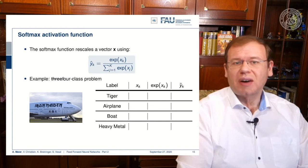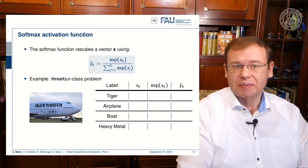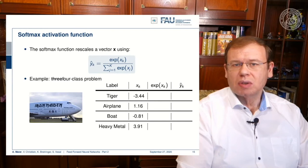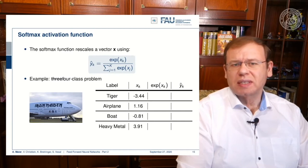Then you have some arbitrary input that is shown here in the column x superscript k. So they are scaled from minus 3.44 to 3.01. This is not so great, let's use the exponential function.